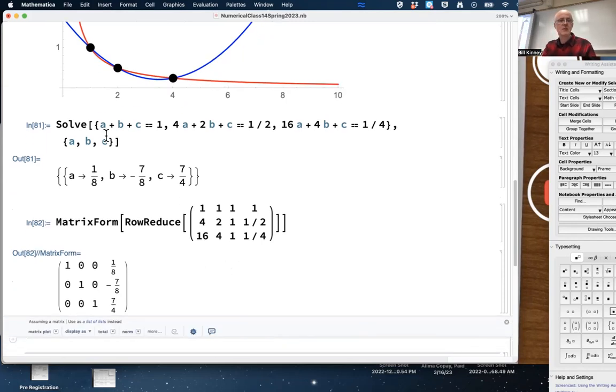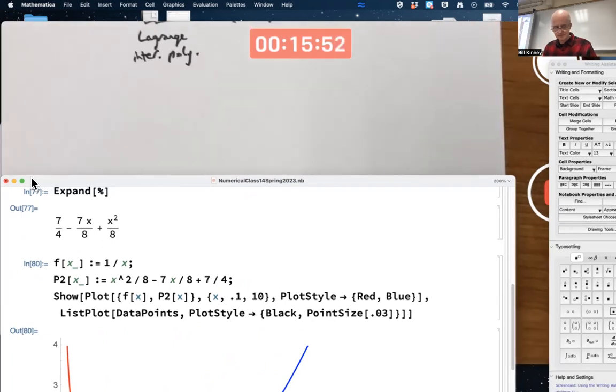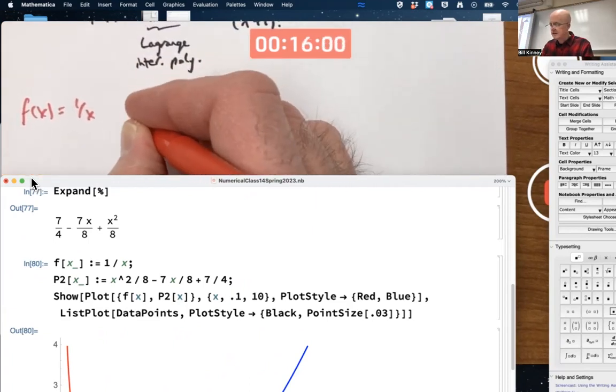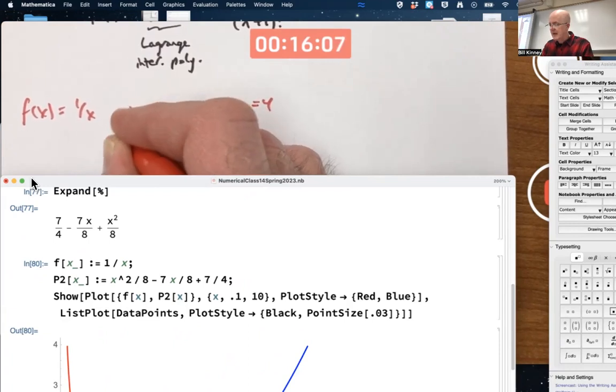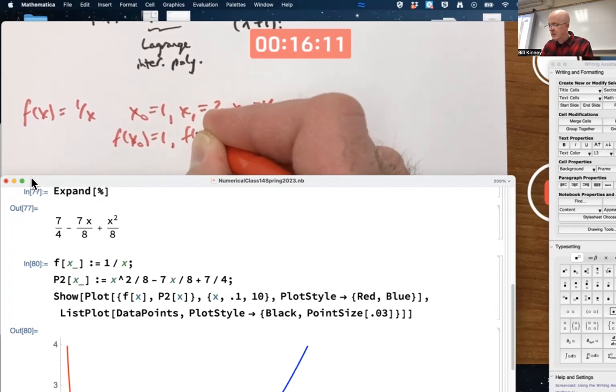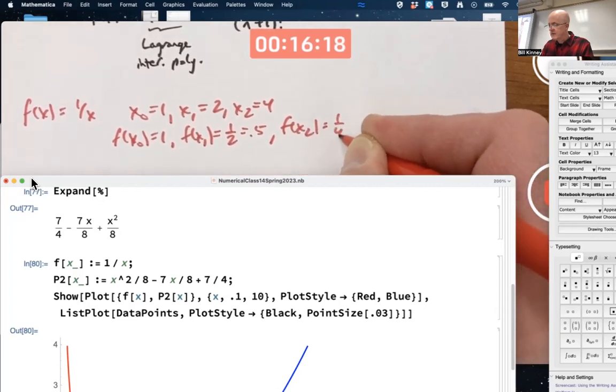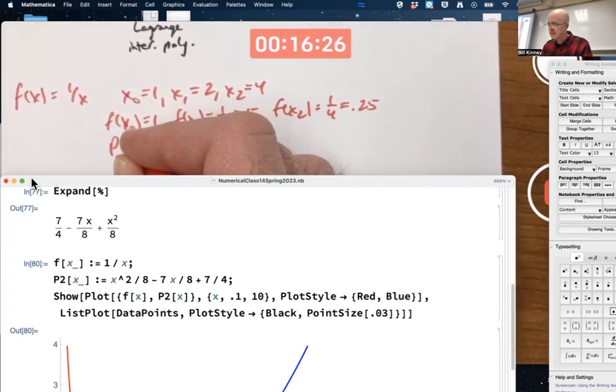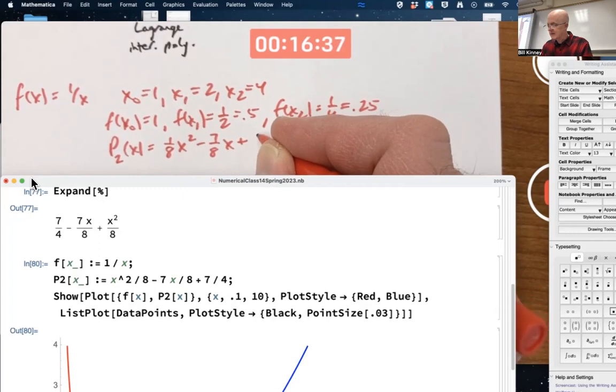But what does the theorem imply now? That's our goal. In this context for our problem, f(x) is again 1/x, x0 again is 1, x1 is 2, and x2 is 4. f(x0) is 1, f(x1) is 1/2 or 0.5, and f(x2) is 1/4 or 0.25. And the quadratic polynomial, which I'll call p2(x), was x²/8 - 7x/8 + 7/4.